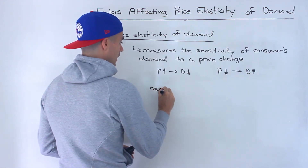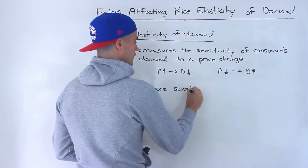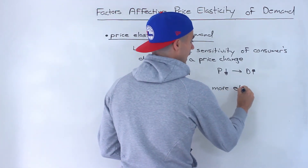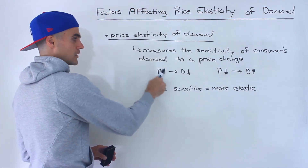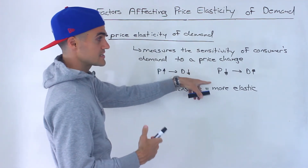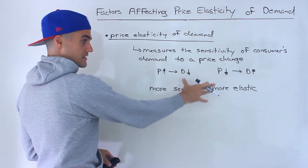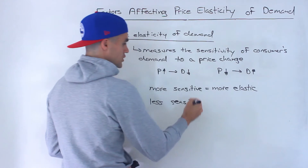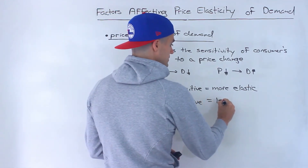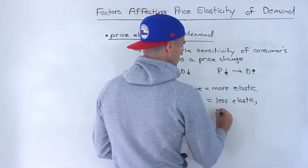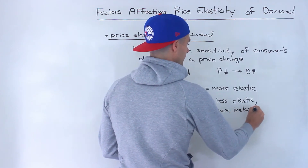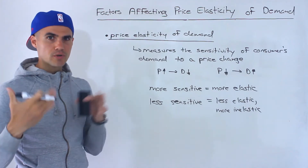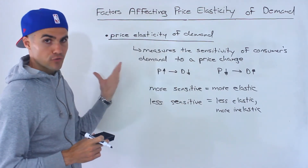If a consumer's demand is more sensitive to a price change, then the price elasticity of demand of that product is going to be more elastic. So if that price increases and demand goes down by a lot, or if that price decreases and demand goes up by a lot, it's more sensitive and more elastic. The less sensitive that change in consumers' demand is to a price change, the less elastic, or the more inelastic — both of these mean the same thing. So just a quick little review.